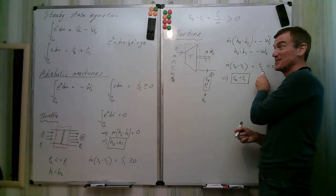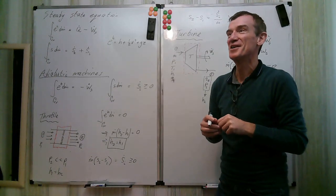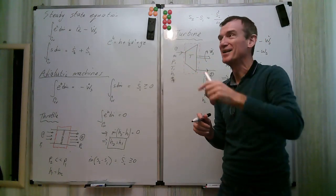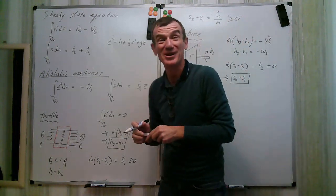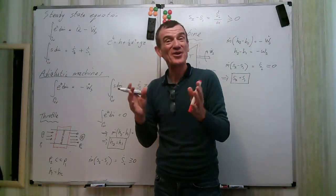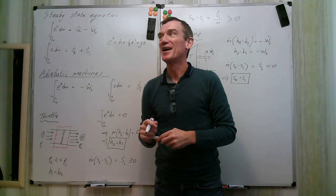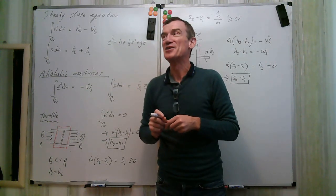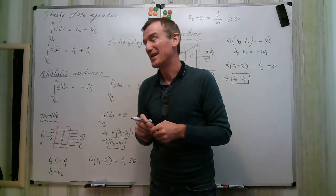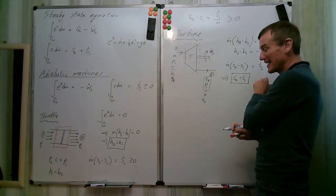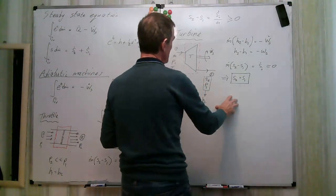Turbines are very efficient machines — lots of engineering effort goes into them — and we do not want to produce entropy. Entropy production represents lost work: if you have a temperature gradient you can connect a heat engine and produce work, but once the gradient is gone, the potential for work is gone. Entropy production robs you of the ability to do work, which is why isentropic operation is the design goal.